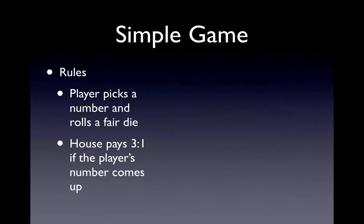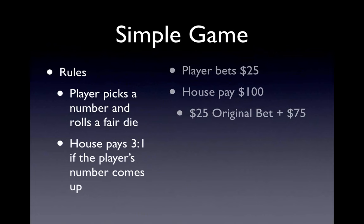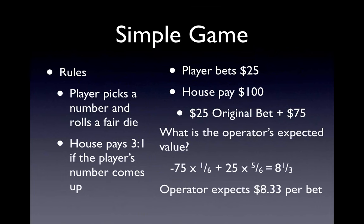To make this more interesting, suppose a game was constructed where a player picks a number from 1 to 6 and rolls a fair die. The operator pays out 3 to 1 on the bet if the player's number comes up. So if a player bets $25 and his number comes up, the operator gives him back $100 — the $25 bet plus $75. At first glance this might seem like a good way for the operator to lose $75, but applying the expected value reveals the two possible outcomes: minus $75 and plus $25. The probability of paying out $75 is 1/6 and the probability of keeping $25 is 5/6, giving an expected value of $8.33 per bet — the operator makes money on average.